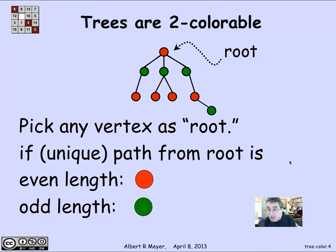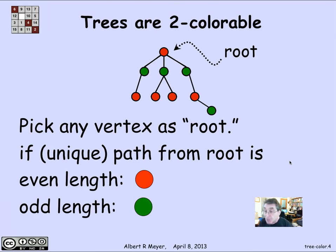Adjacent nodes are going to be at a distance where one is an odd distance and one is an even distance, which is why this coloring method works. A general property of two-coloring is that to figure out whether a graph is two-colorable, you just pick an arbitrary vertex, give it a color — color it red — then color all vertices adjacent to it green, and keep going, coloring each vertex with a color different from its already-colored neighbor, until you get stuck. If you don't get stuck, it's two-colorable. If it's not two-colorable, you're guaranteed to get stuck. That's a very easy way to figure out if a graph is two-colorable.